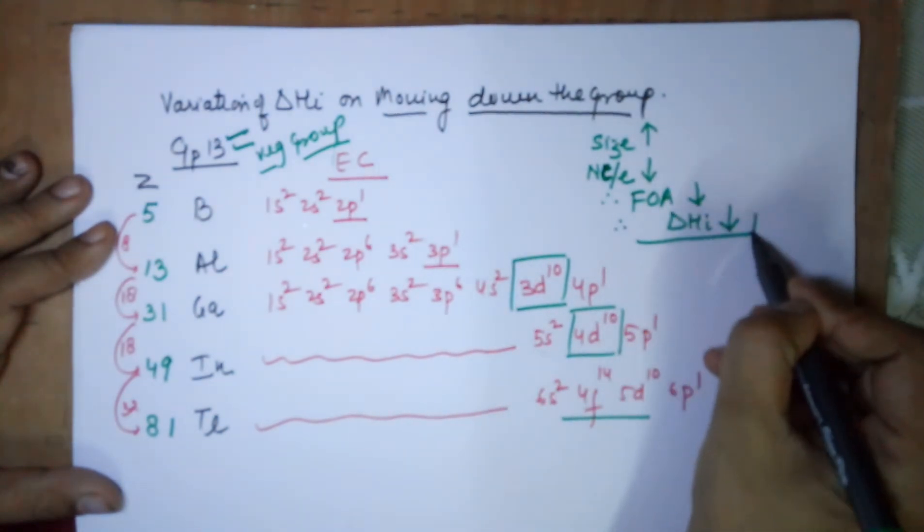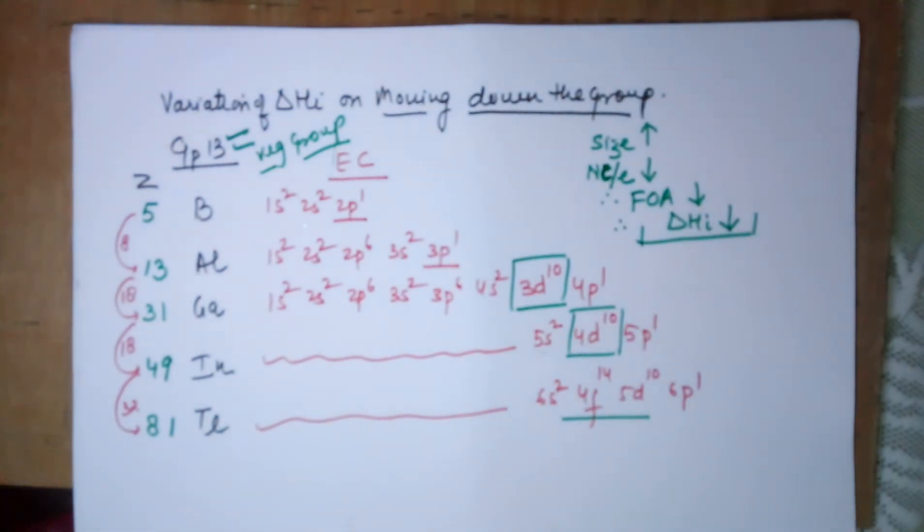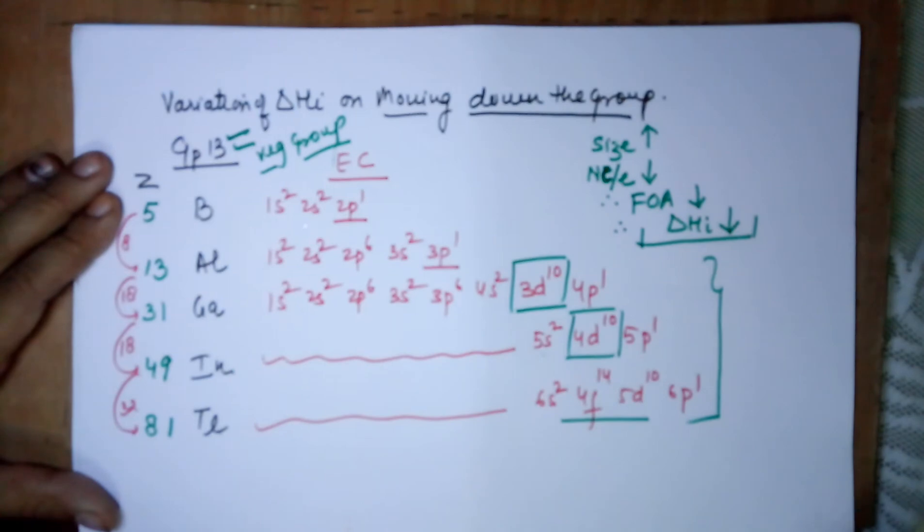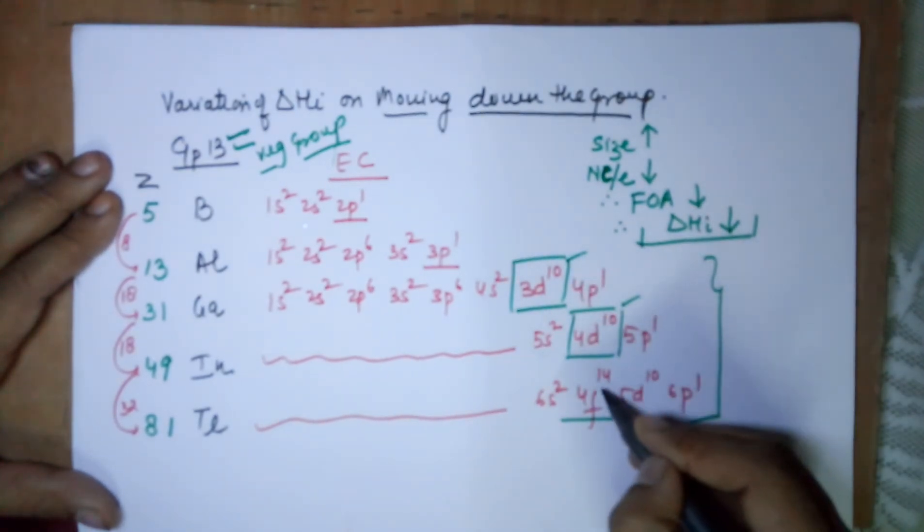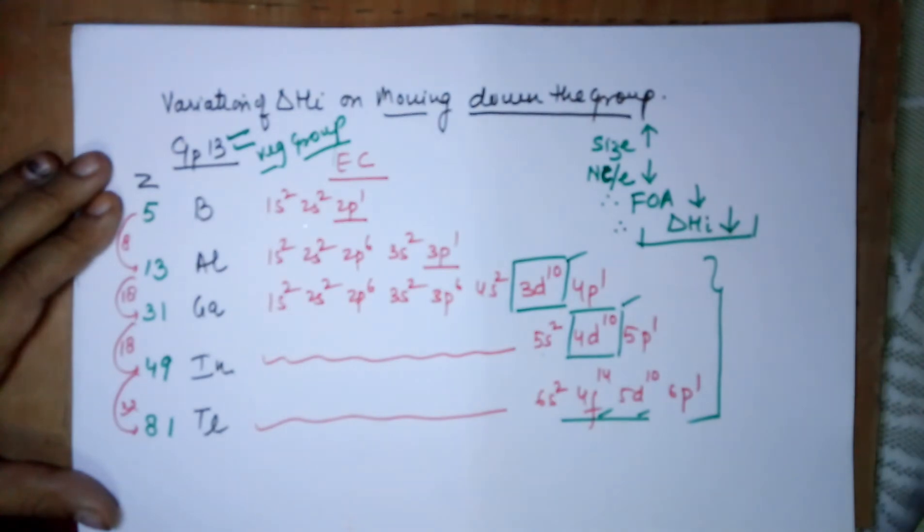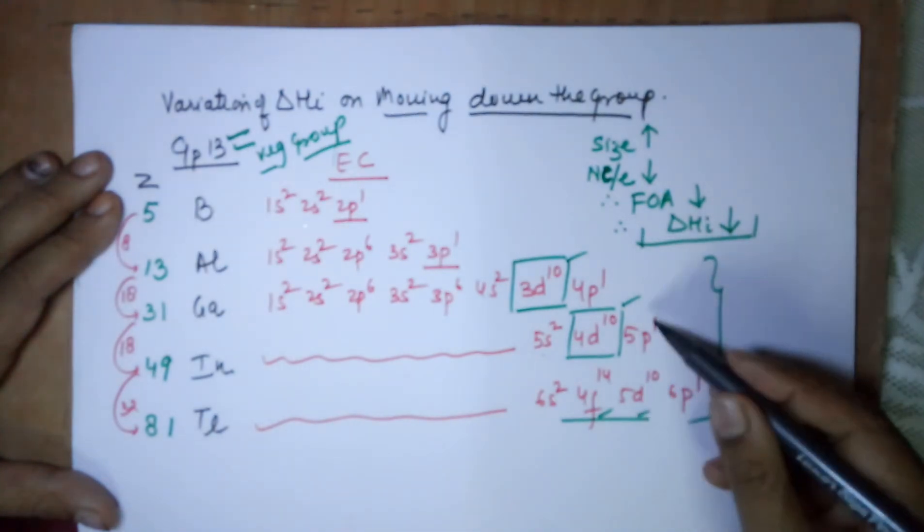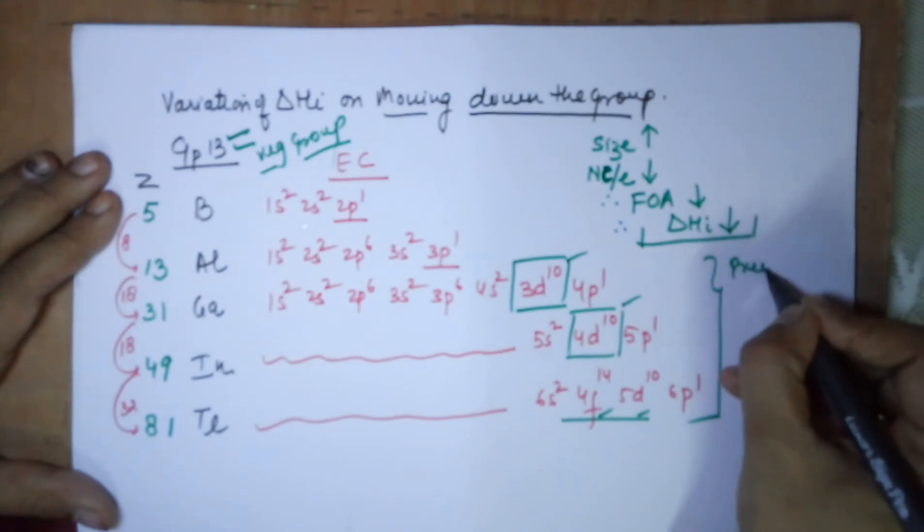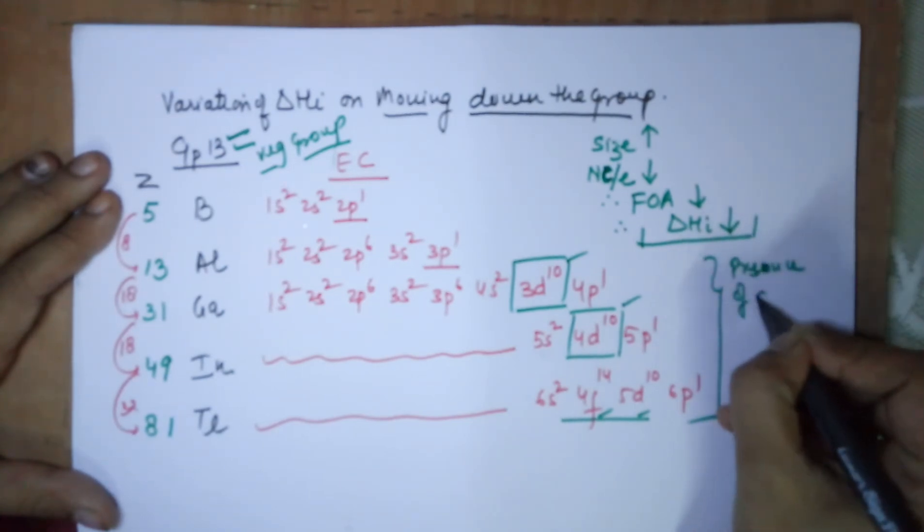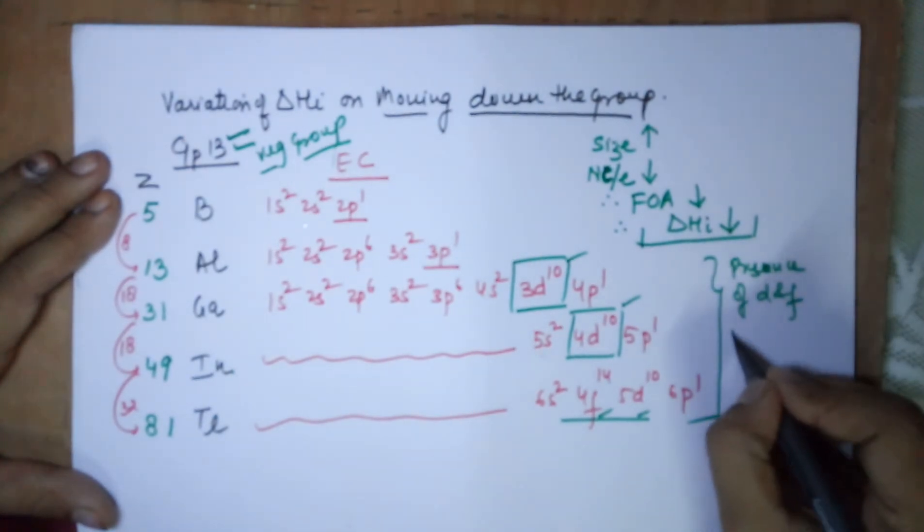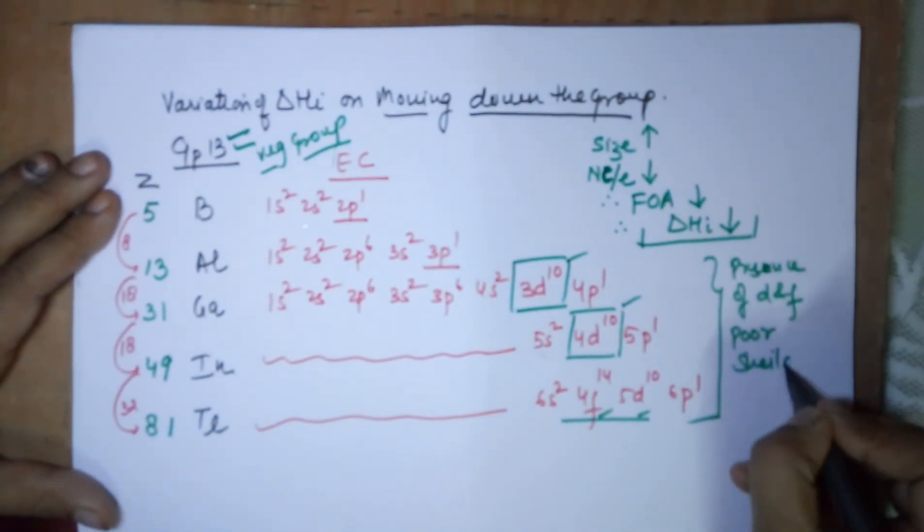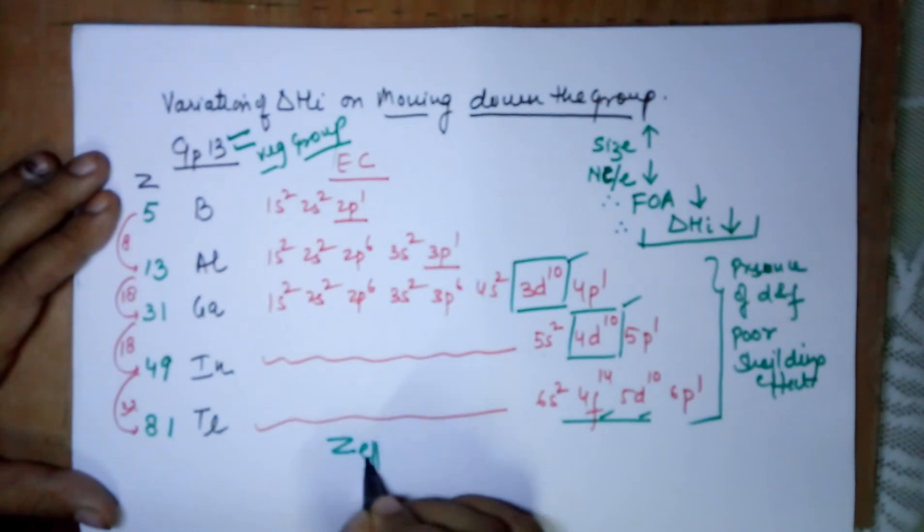On moving down the group, the ionization energy would always decrease is what we know. Now there are certain exceptions, always towards the last three members. Whenever you have a d or an f incorporated, there is a poor shielding effect down the group. Towards the last members, presence of d and f subshells leads to poor shielding effect. If the poor shielding effect is there, then it causes z-effective, that is the effective nuclear charge, to increase.